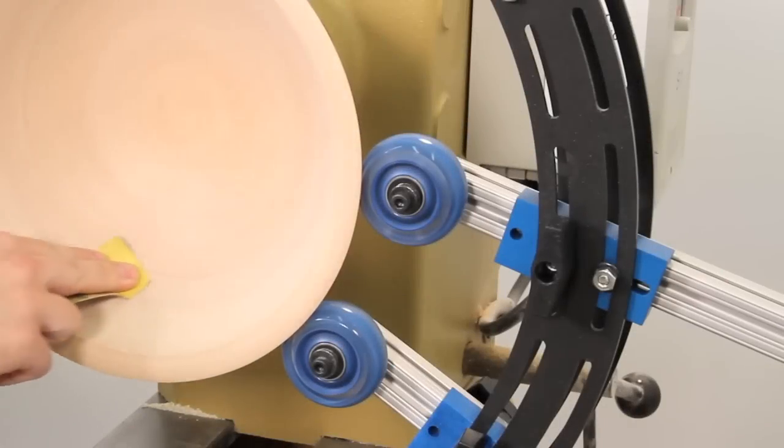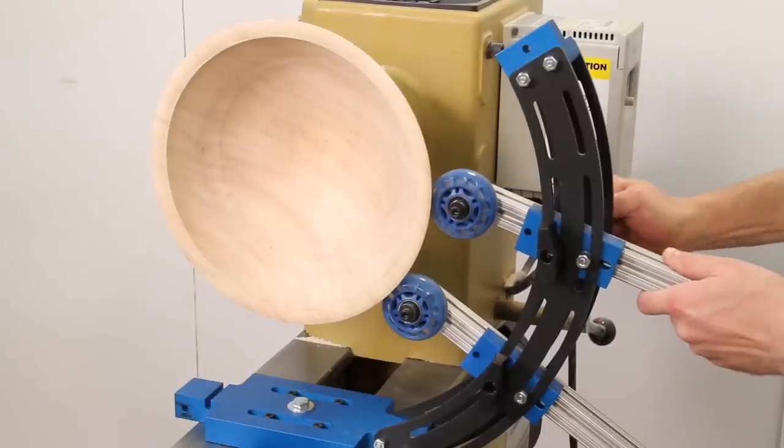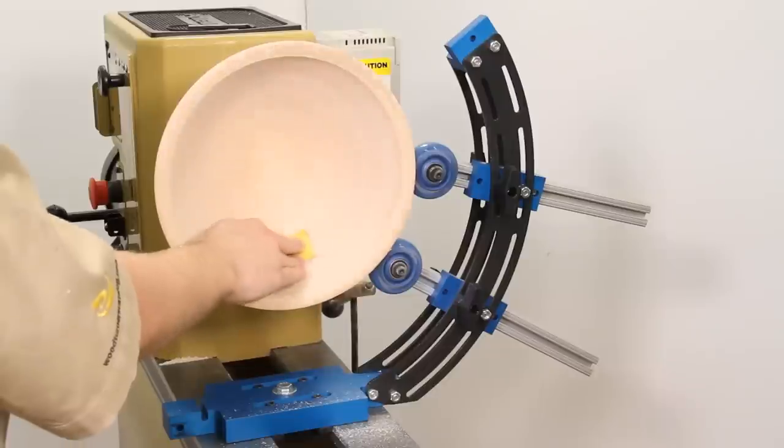For directional support, remove the front portion of the MultiRest to support the work from behind. This allows you to shape and sand the work piece without any interference.